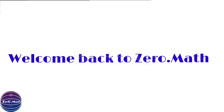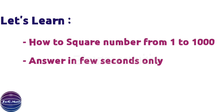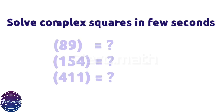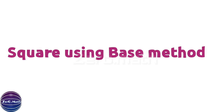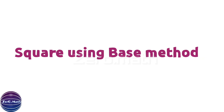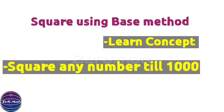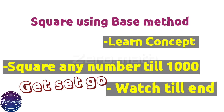Hello friends, welcome back to Zero Math. In today's session, we are going to learn how to find out the square of numbers from 1 to 1000, within just a few seconds. This trick is very useful during competitive exams where you have very less time and have to solve very complex sums. This method is called the base method to find out the square of a number. Make sure you watch this video till the end to understand the nitty-gritties of this trick.